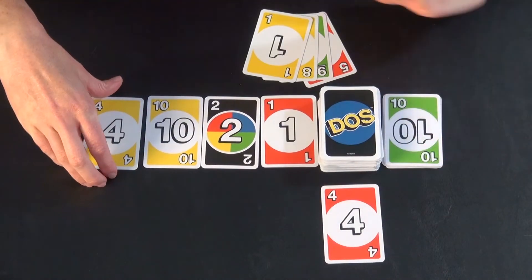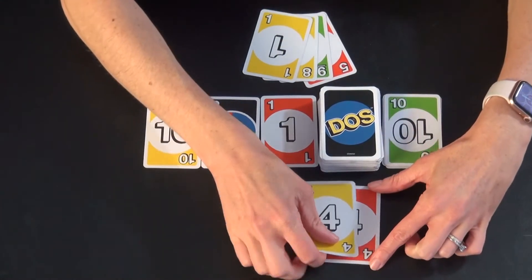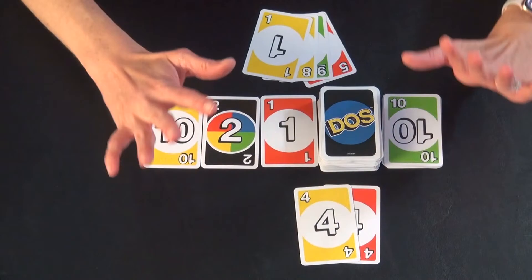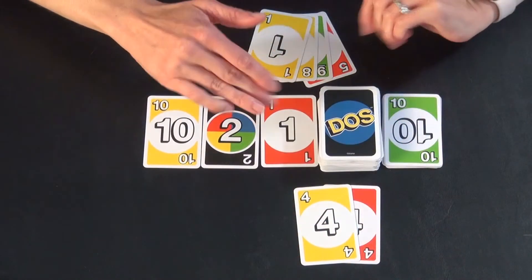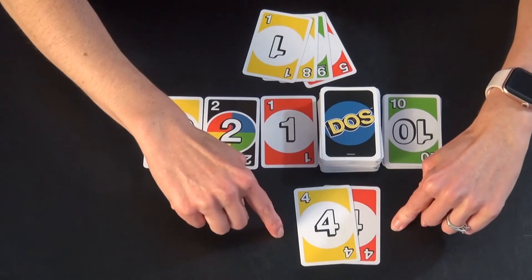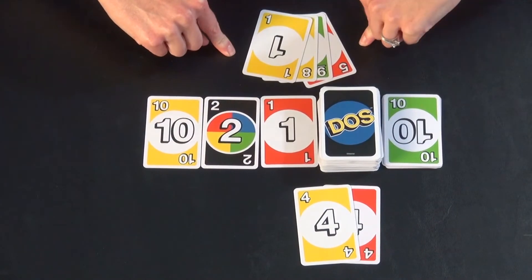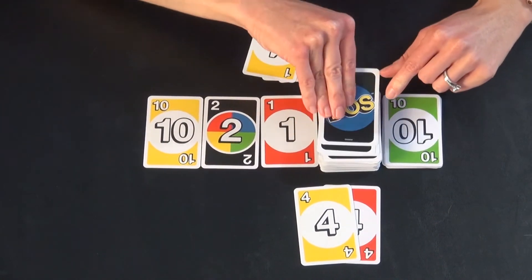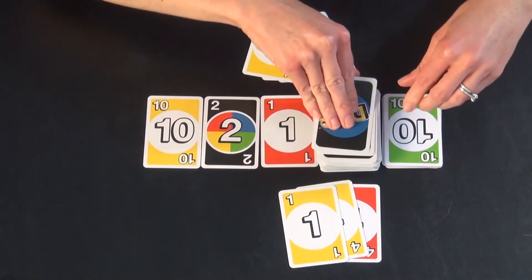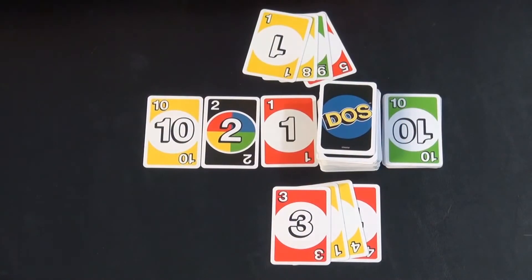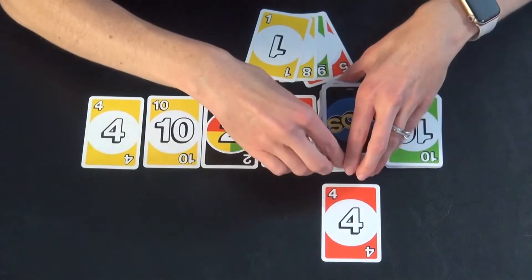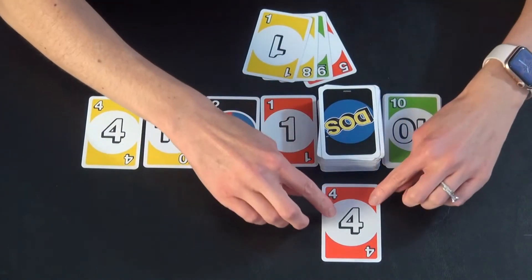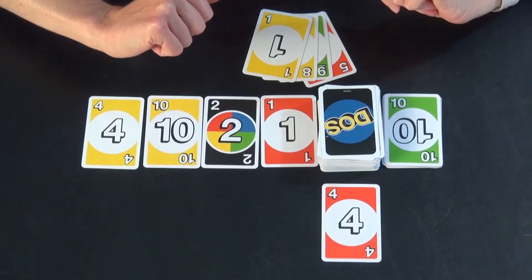And the most important part of this game, when this player had these two cards, if you have two cards and that's all you have in your hand at any point, you need to shout out DOS. Because if they didn't shout it out and this person said it first, then they would have to draw an additional two cards into their hand. If they got down to one card, if that didn't happen and they got down to this card and nobody said anything, you don't have to say anything when you have just one card. You don't have to say anything at all.